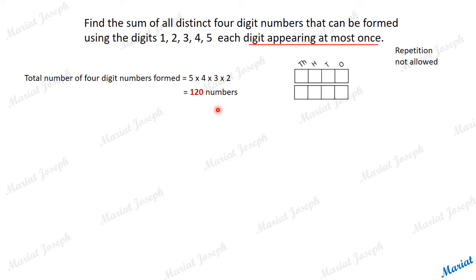Now, there are going to be 120 numbers like this. Then we need to add all of them. How to add them? Let's add them digit-wise.